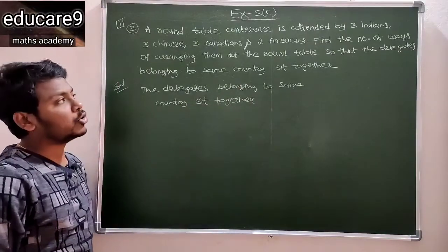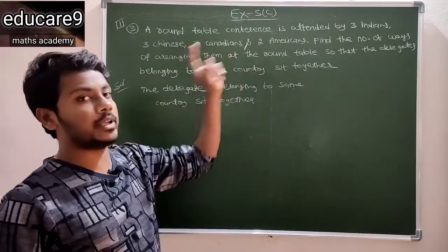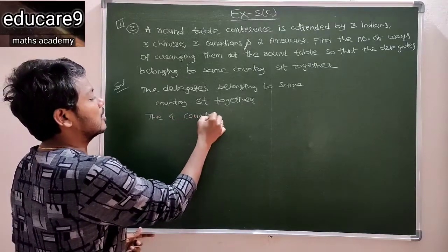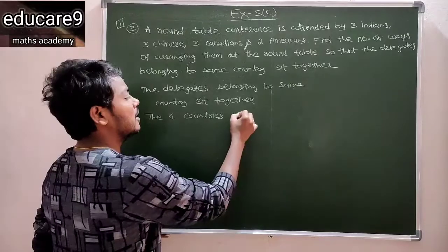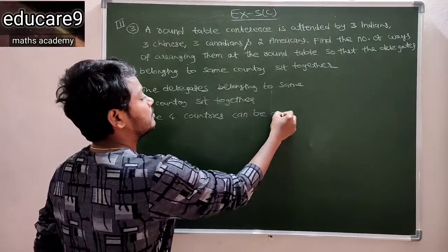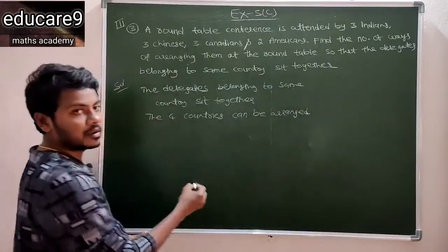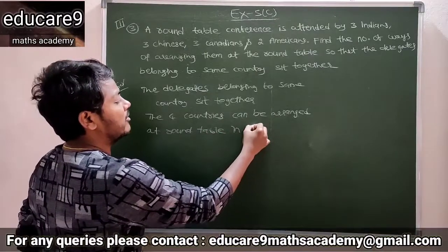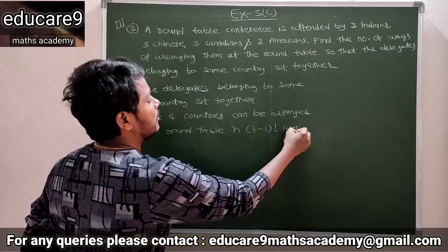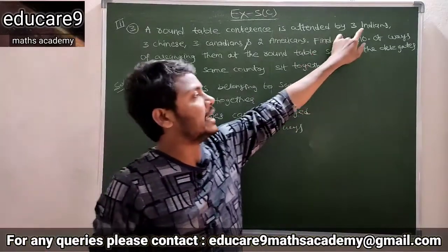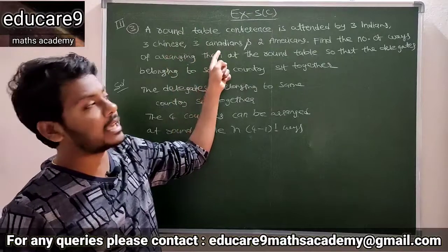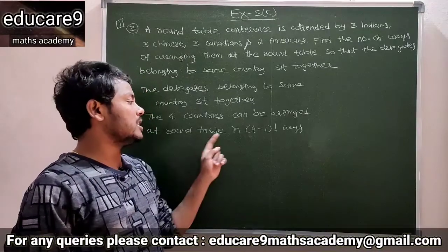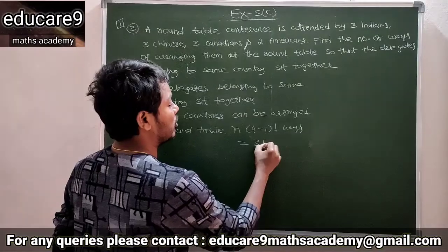Here we have total four countries: India, Chinese, Canada, and America. So therefore the four countries can be arranged at a round table in how many ways — four minus one factorial, which is three factorial.